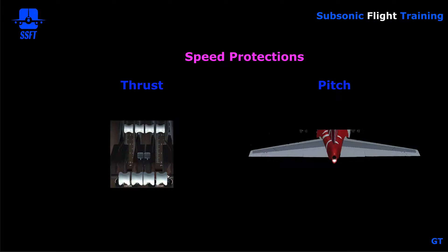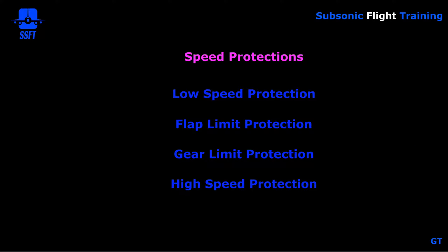Our speed protections come down to the autothrottle and/or pitch through the elevator, depending on what's controlling speed. We have speed protections for low speed, high speed, flap limit protection, and gear limit protection. In the low speed regime, we have protection via pitch or thrust to keep us a certain margin from stalling. At the high speed regime, we're not going to exceed VMO/MMO by pitch or thrust depending on what's controlling speed. And we have protection for when our flaps are out for the placard flap limit speeds, and if the gear is out for the gear limit speeds.